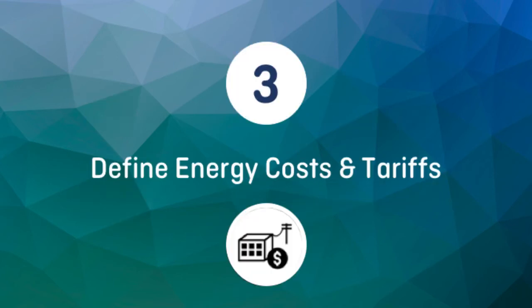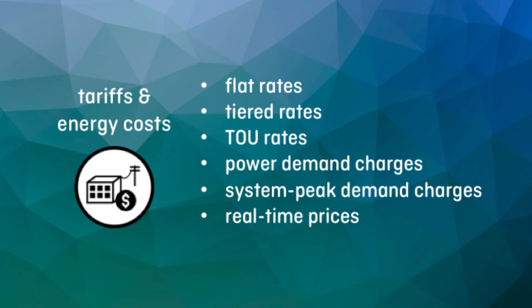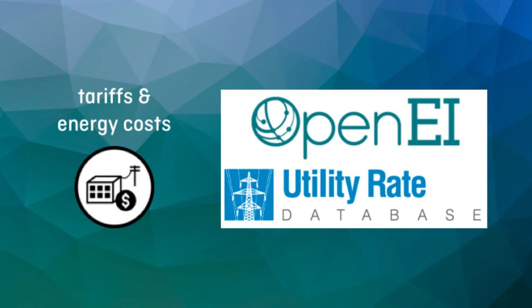With the site characteristics defined, the next step is to define the energy cost landscape. This means defining your site's tariff structures and rates, fuel costs, export options, and any other energy market details that might be relevant to your project. For tariffs, DIRCAM is able to capture a wide variety of tariff structures including flat rates, tiered rates, time-of-use rates, monthly demand charges, system peak demand charges, and real-time prices. DIRCAM includes a number of input tables that allow you to select which of these tariff structures apply to your project and to define the rates for each of them. When starting a new project, DIRCAM also allows you to automatically populate these tables from a collection of dozens of U.S. tariffs. However, tariff structures — and especially rates — change often. These reference tariffs are meant to serve as starting points; we generally recommend that users update these values to ensure they accurately reflect the current energy costs of their specific projects.